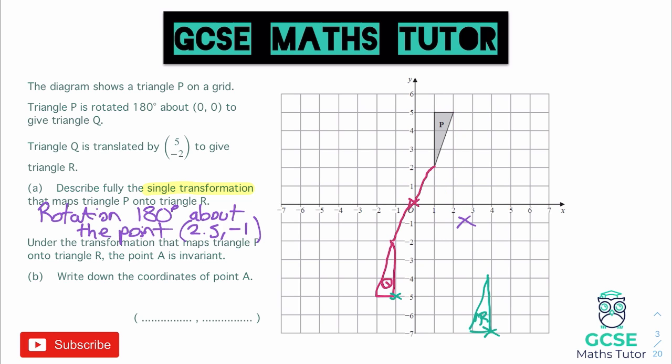Now for part B: under the transformation that maps triangle P to triangle R, the point at A is invariant. Write down the coordinates of point A. Invariant means a point that hasn't moved. Normally when we look at invariant points, it's quite common that one of the points of the triangle is still touching after the transformation. For example, if the translation had moved the triangle two places right and four places up, the top of that triangle there would still be connected, so that coordinate wouldn't have moved within that transformation.